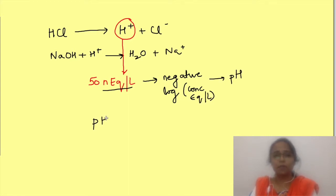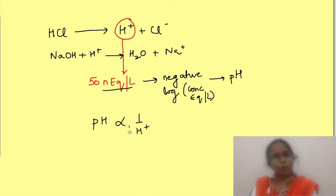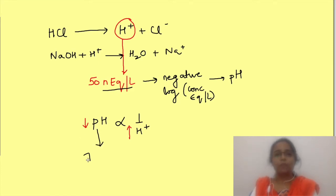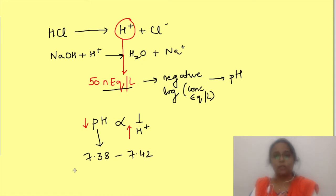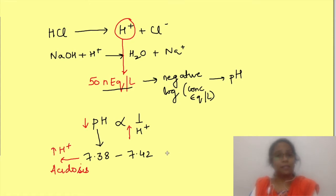Since pH is a negative log, it is inversely related to the concentration of hydrogen ions — more hydrogen ions means less pH and vice versa. Normal pH of extracellular fluids ranges from 7.38 to 7.42. A decrease in pH is known as acidosis, meaning more hydrogen ions are present, while an increase in pH is known as alkalosis.